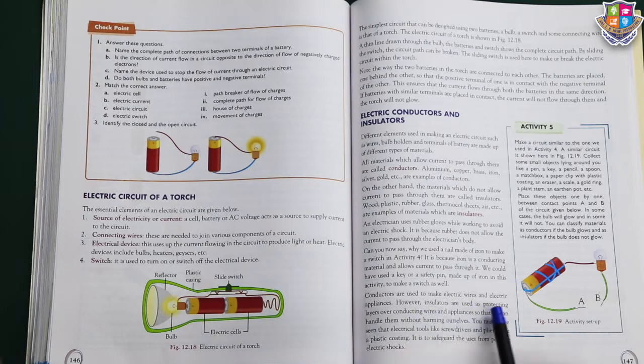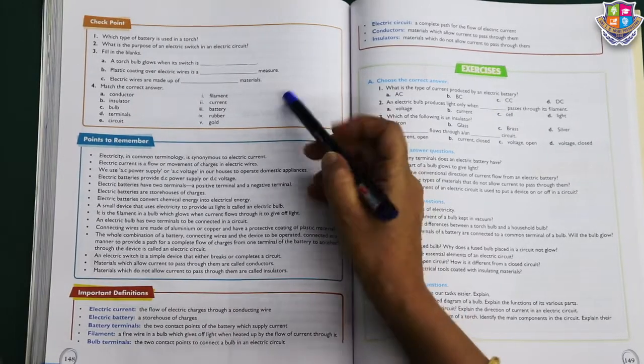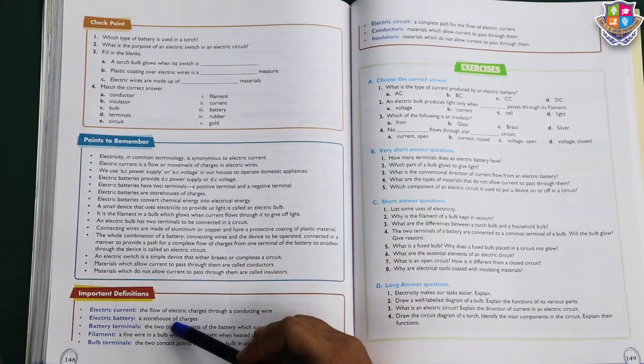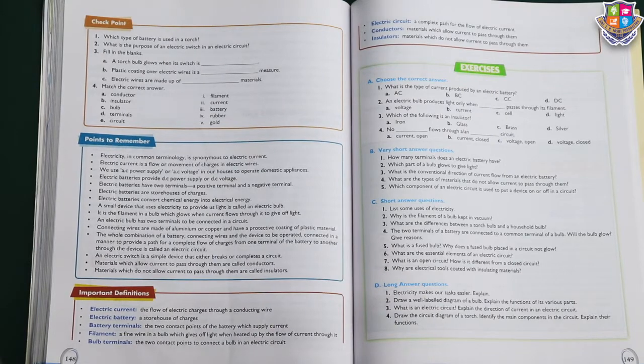Conductors and insulators are two important parts of the electric current. Conductors are used to make electric wires, electric appliances. You must have seen the electric tools like screwdrivers, pliers have a plastic coating. Why? So that we are safeguarded from the electric shocks. Now children, this is the checkpoint related to the above material and go through these points to remember. Thank you. Thank you very much.